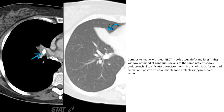Composite image with axial non-contrast enhanced CT in soft tissue and lung windows obtained at contiguous levels of the same patient, showing endobronchial calcification consistent with broncholith, seen with solid arrow indicated, and associated right middle-lobe atelectasis, seen with solid arrow indicated.